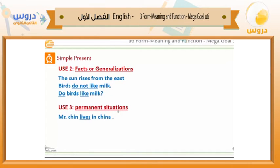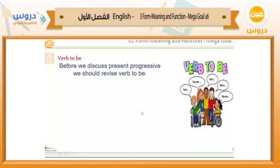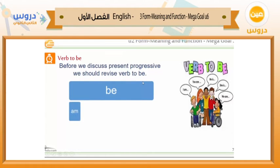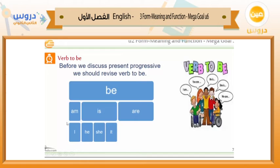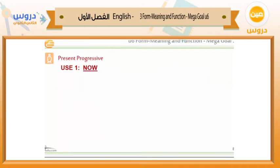Also we use simple present for permanent situations, like 'Mr. Chen lives in China' — this is a permanent situation. Before we discuss the present progressive, we should revise verb to be. We have am, is, are. The pronouns used before 'am' — I only. Before 'is' — he, she, it. Before 'are' — we, you, they.